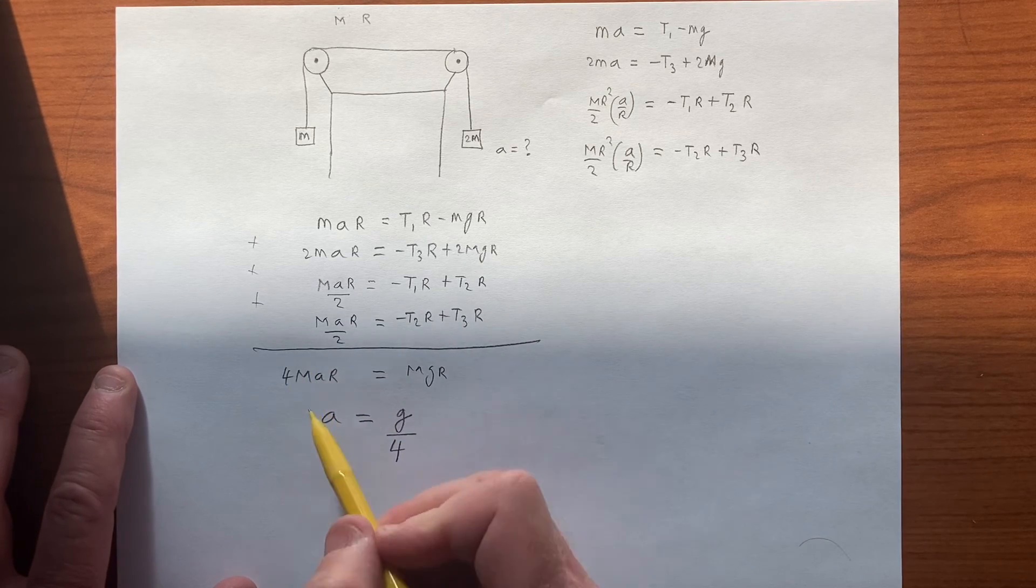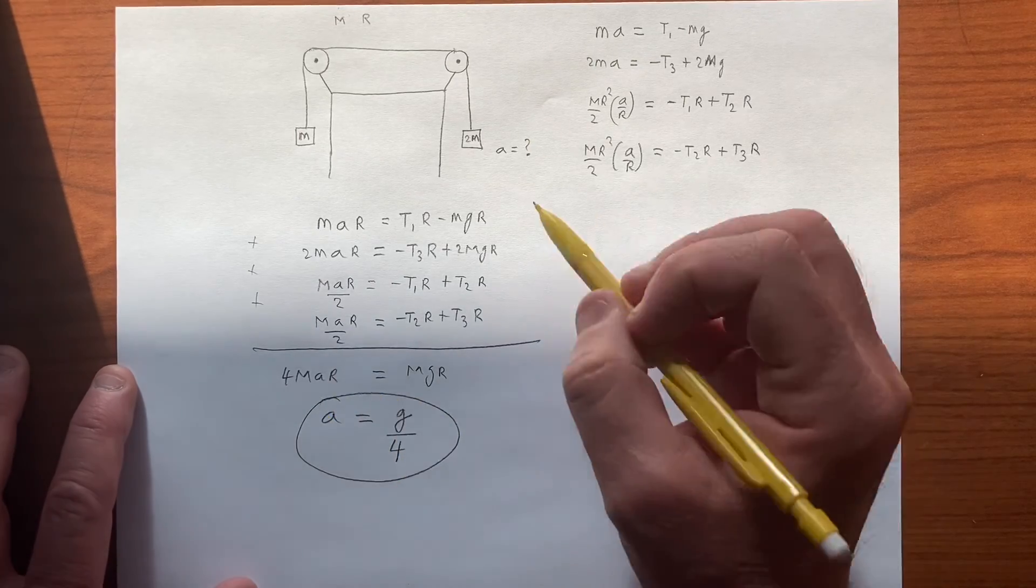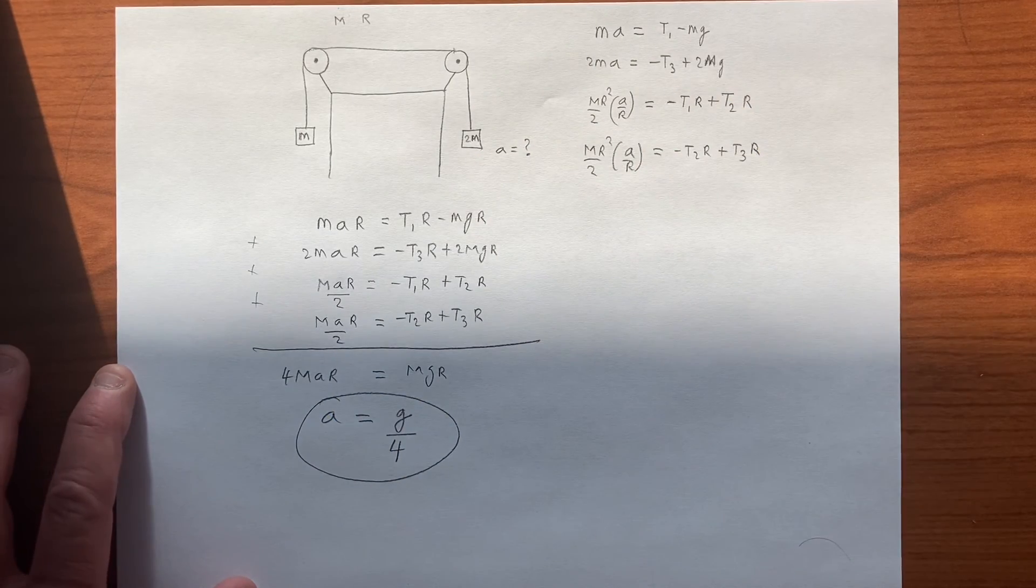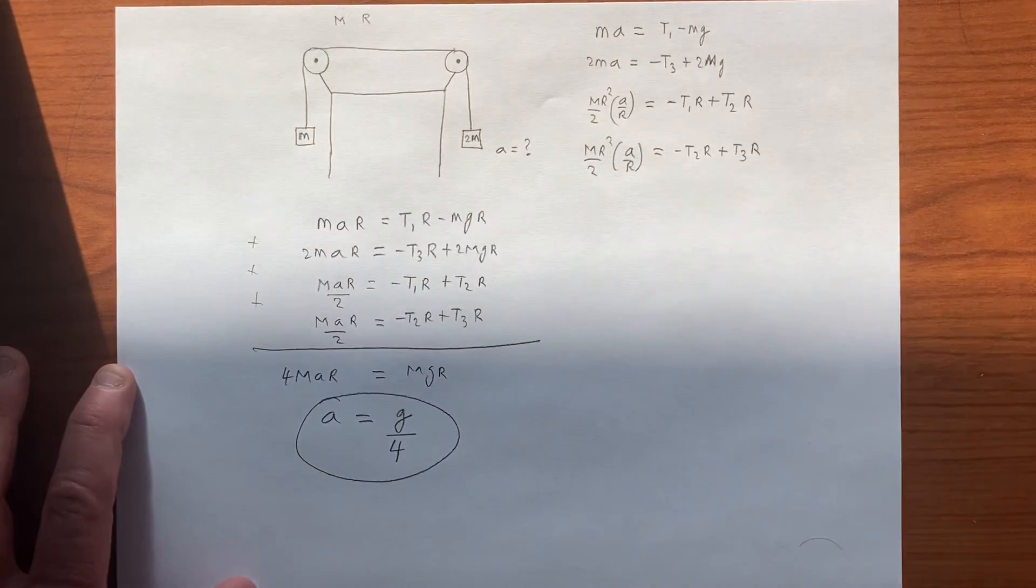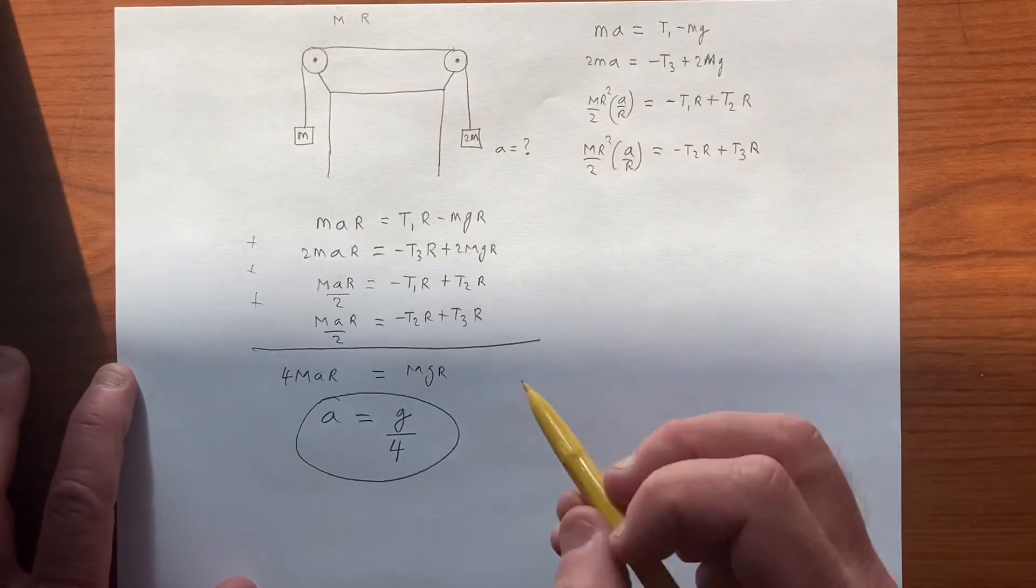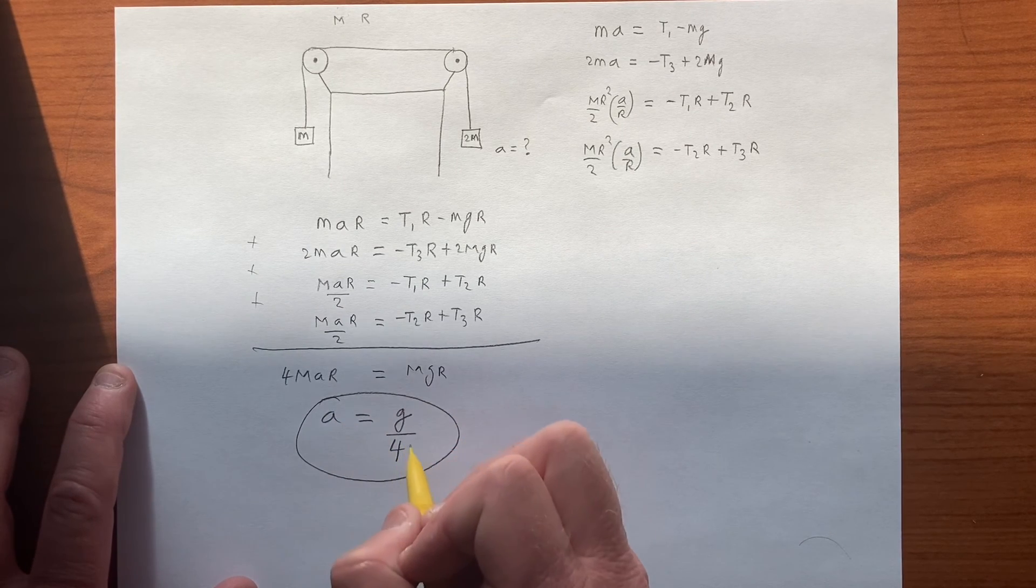If we do that right, we cancel the m and the r, and we have just g over 4, so that's the acceleration of this object downward. Of course it's the acceleration upward of that one, and these have angular accelerations related to that, divided by r.